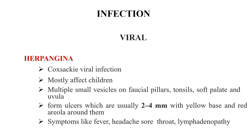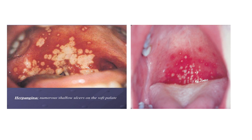Infections can be viral, bacterial, or fungal. The viral ones include herpangina, which is a coxsackievirus infection mostly affecting children. Multiple small vesicles appear on the facial pillars, tonsils, soft palate, and uvula; they rupture to form small ulcers usually 2 to 4 mm in size, having a yellow base and a red areola. They seldom persist for more than one week, and symptoms like fever, headache, sore throat, and lymphadenopathy can occur. These small ulcers are present here in the soft palate, and here the hard palate is also involved.